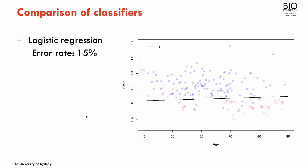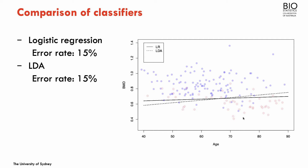I'll now compare the different classifiers we've seen so far, using age and bone mineral density to predict fracture. With linear regression, the boundary was a line: anything above is classified as non-fracture, below as fracture, giving an error rate of 15%. For linear discriminant analysis, we still have a linear boundary, but slightly different — LDA finds the direction that maximizes separation between groups while minimizing within-group variance on the projection to a lower-dimensional space. The error rate for LDA was identical to logistic regression.